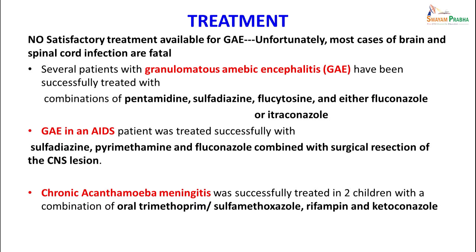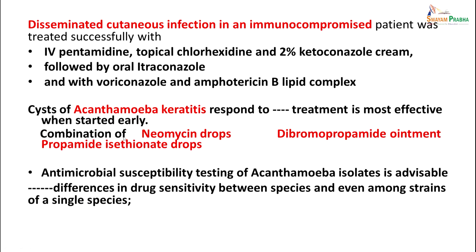No satisfactory treatment is available for granulomatous amoebic encephalitis. Unfortunately most cases of brain and spinal cord infection are fatal. Several patients have been successfully treated with combinations of pentamidine, sulfadiazine, flucytosine, and either fluconazole or itraconazole. GAE in AIDS patients was treated successfully with sulfadiazine, pyrimethamine, and fluconazole combined with surgical resection of the CNS lesion. Meningitis was also treated successfully in two children using oral trimethoprim-sulfamethoxazole, rifampicin, and ketoconazole. Any of these drug combinations may be effective. Disseminated cutaneous infection in immunocompromised patients was treated with IV pentamidine, chlorhexidine, and 2 percent ketoconazole cream followed by oral itraconazole or voriconazole and amphotericin B lipid complex.